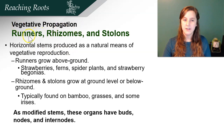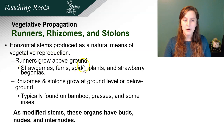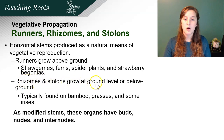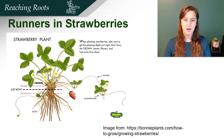A lot of vegetative propagation also occurs through runners, rhizomes, and stolons — horizontal stems produced as a natural means of vegetative reproduction. Runners grow above ground; examples include strawberries, ferns, spider plants, and begonias. Rhizomes and stolons grow at ground level or below ground and are typically found on bamboo, grasses, and some irises. As modified stems, these organs have buds, nodes, and internodes. The strawberry runner is a classic example.